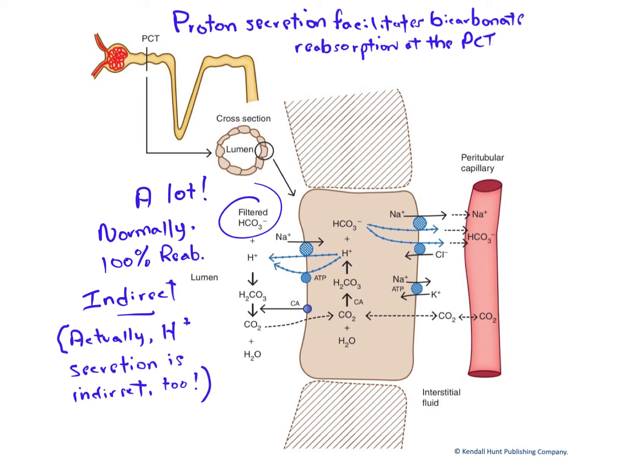Here we see the proton secretion facilitates bicarbonate reabsorption at the nephron's PCT. In the figure, top left, we have a cartoon of the nephron. Right here is the nephron's proximal convoluted tubule. Make a cross-section through a segment of that tubule. We see it like this.